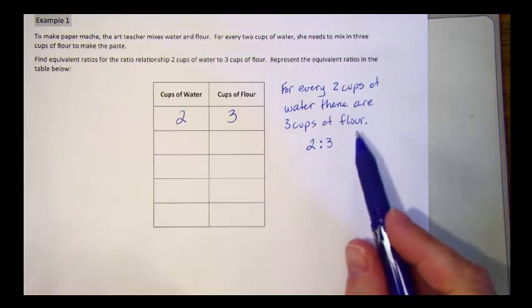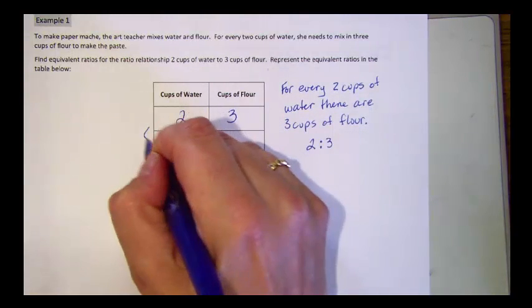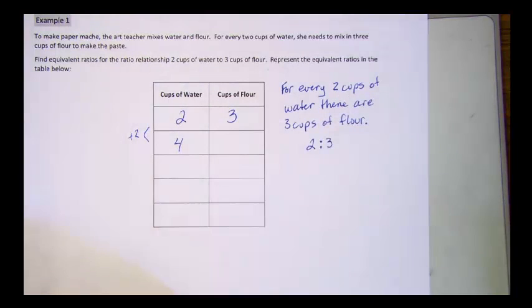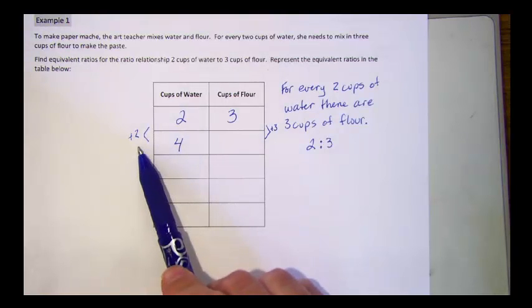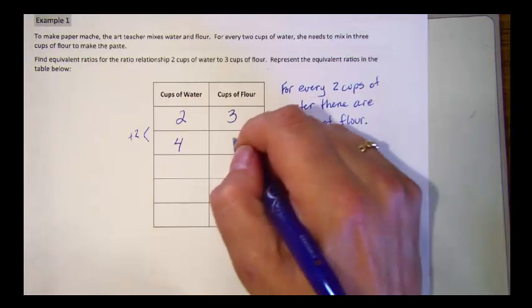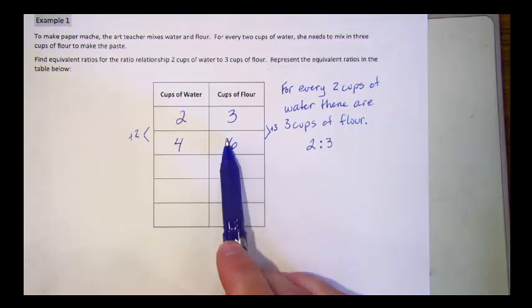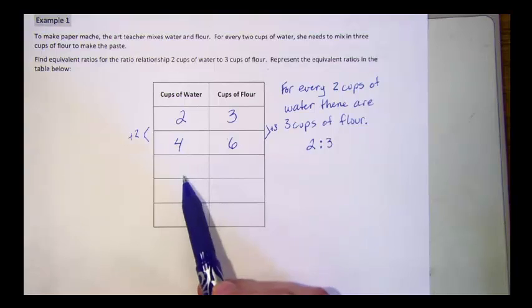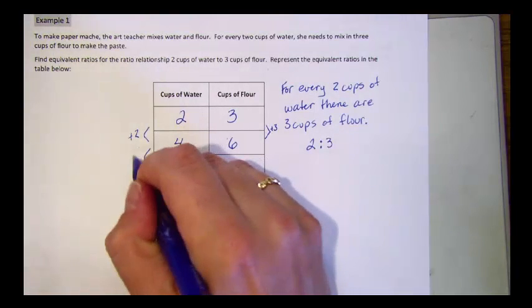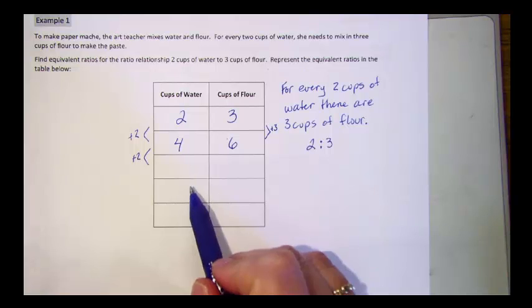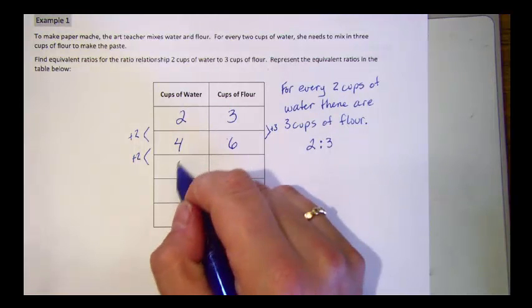So what if I add another two cups of water? That would give me a total of four cups of water. How many cups of flour would I need to use? That's right, because for every two cups of water I add, I have to add three cups of flour. So that gives me the ratio four to six. What about if I add another two cups of water? Now how many cups of water do I have? That's right, six.